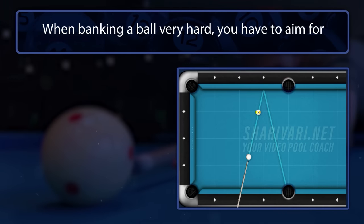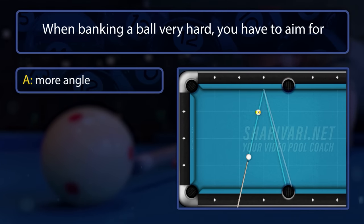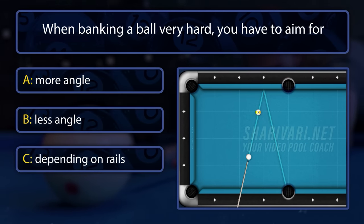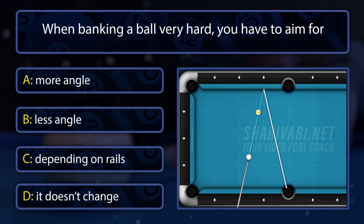When banking a ball very hard, do you have to aim for more angle, less angle, does it depend on the rails, or does it not change?